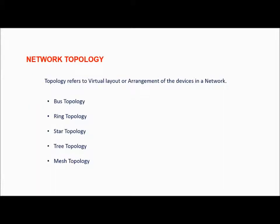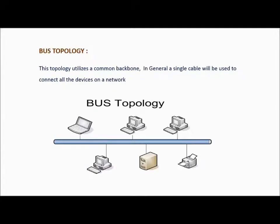Network topologies. In general, topology refers to a virtual layout or arrangement of devices in the network. In order to establish a network, these are the five basic topologies: bus topology, ring topology, star topology, tree topology, and mesh topology. Let us discuss each topology in detail.